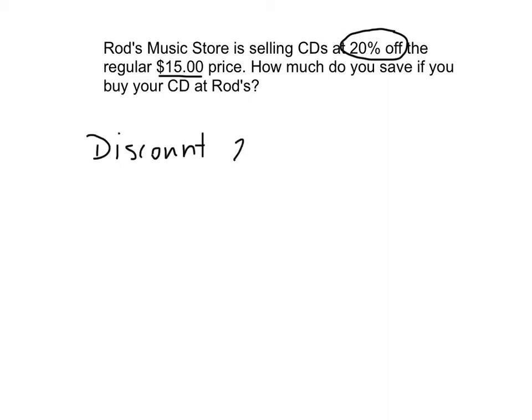Right, we're getting a discount of 20%. So you're saving 20% of what? 15. Of $15, good. So we need to figure out how much are we actually saving. So what is 20% of $15? That's what we need to find. So we're going to solve this in three ways. The first method is turning 20% into a fraction.